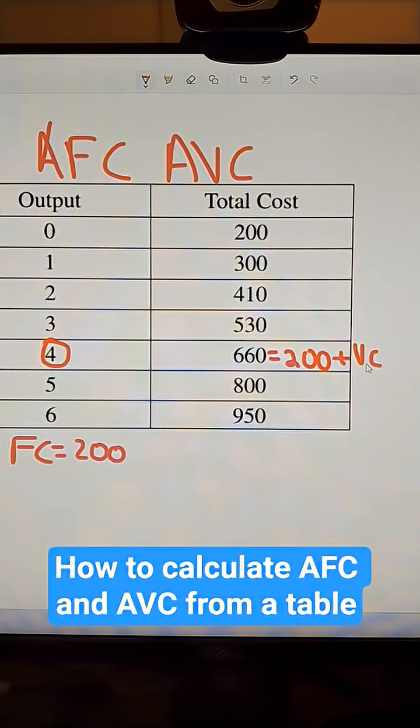So I can figure that out. Variable cost is going to be 460. Now whenever I average anything, I'm just dividing by the quantity.